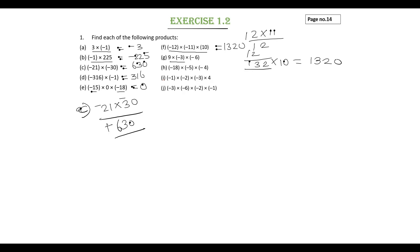G subdivision, 9 into minus 3. 9 into 3 is 27. Since 1 of the numbers is negative, the result is negative. So minus 27 into minus 6. 27 into 6 is 162. Since both integers have negative sign, your result is positive, plus 162.